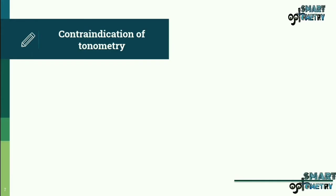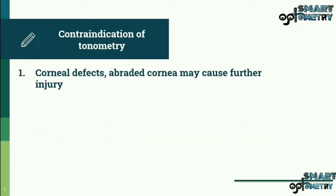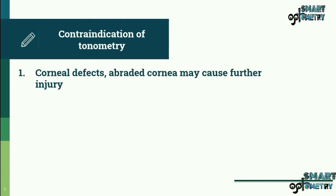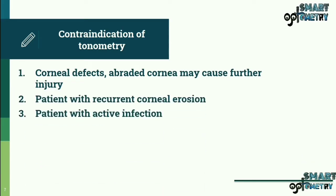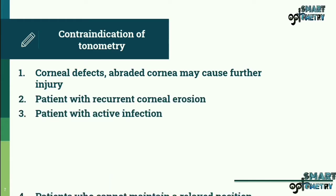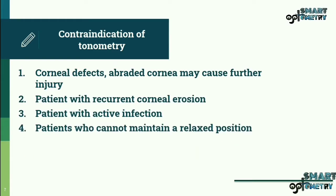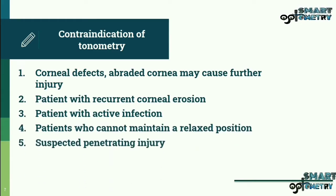Contraindications of tonometry include corneal defects, as an aberrated cornea may cause further injury; patients with recurrent corneal erosion; patients with active infection; patients who cannot maintain a relaxed position; and suspected penetrating eye injury.